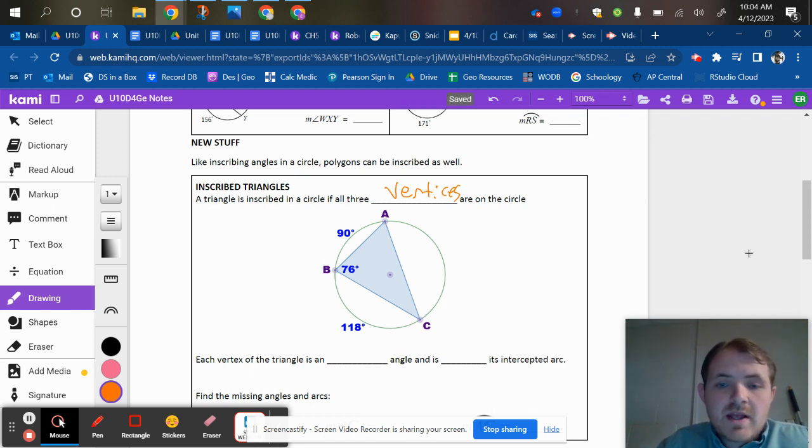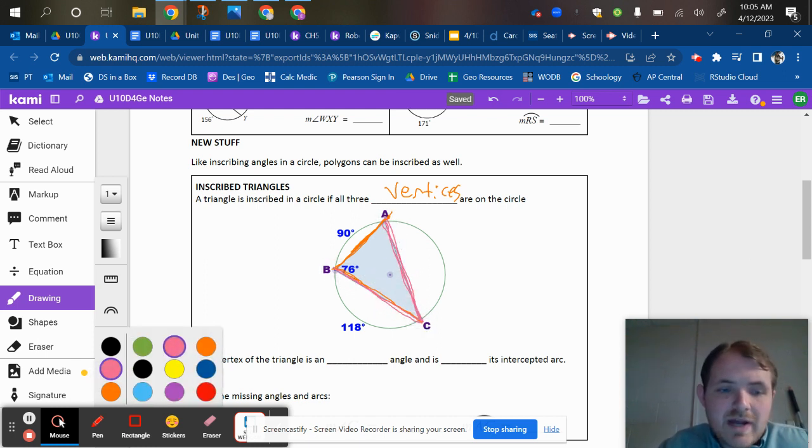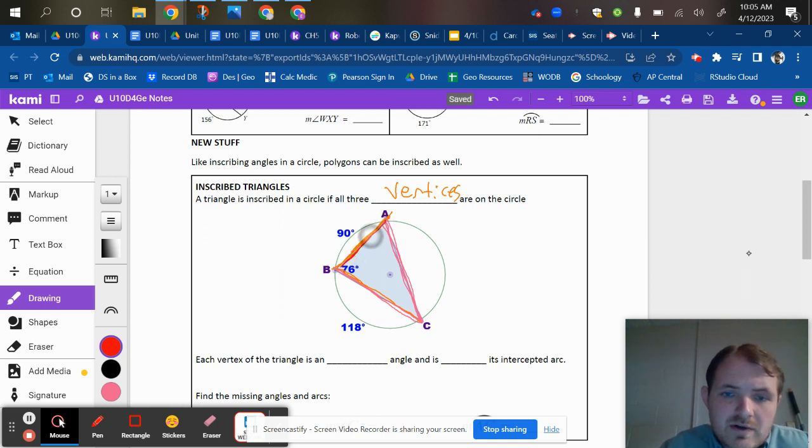And if you notice, each angle is inscribed. Angle B is sitting on that circle out there. Angle C sitting on the circle over there. And angle A is sitting on the circle up there.